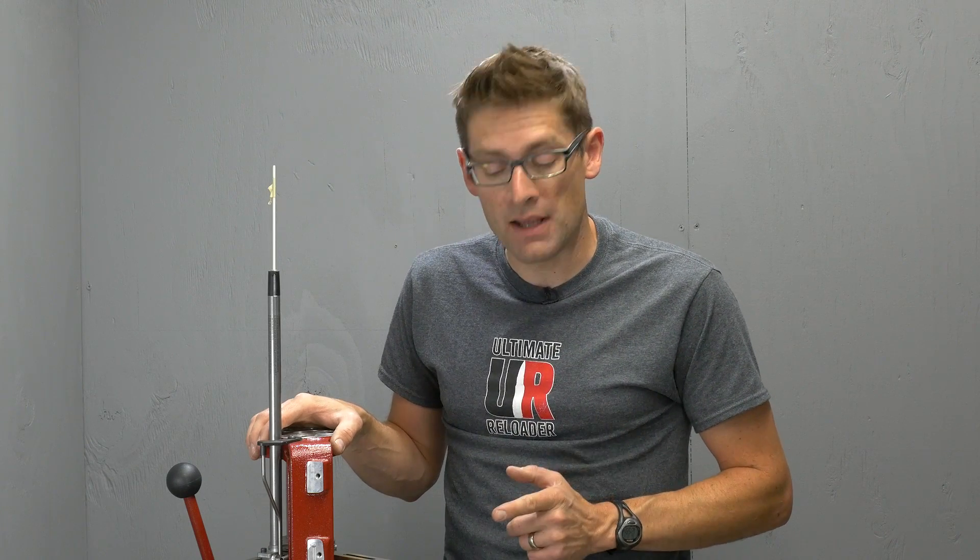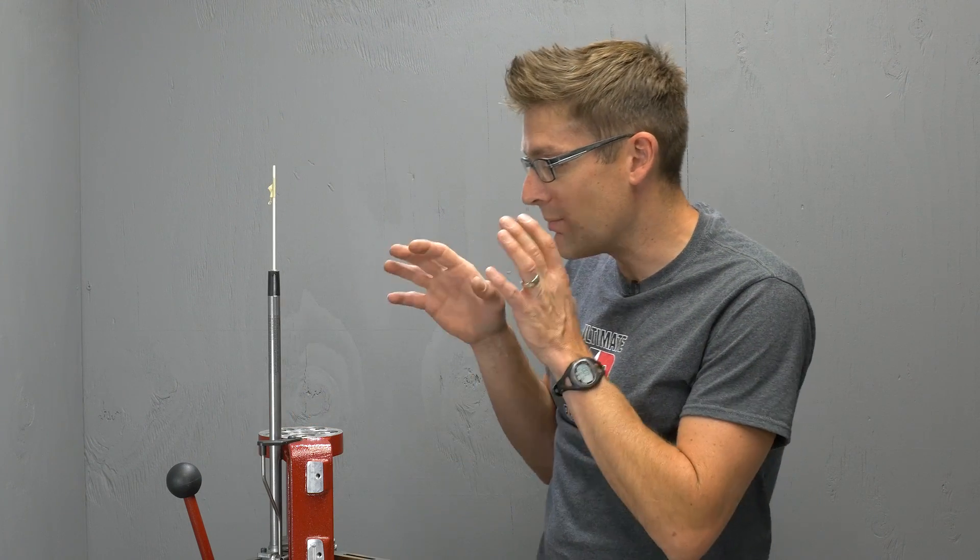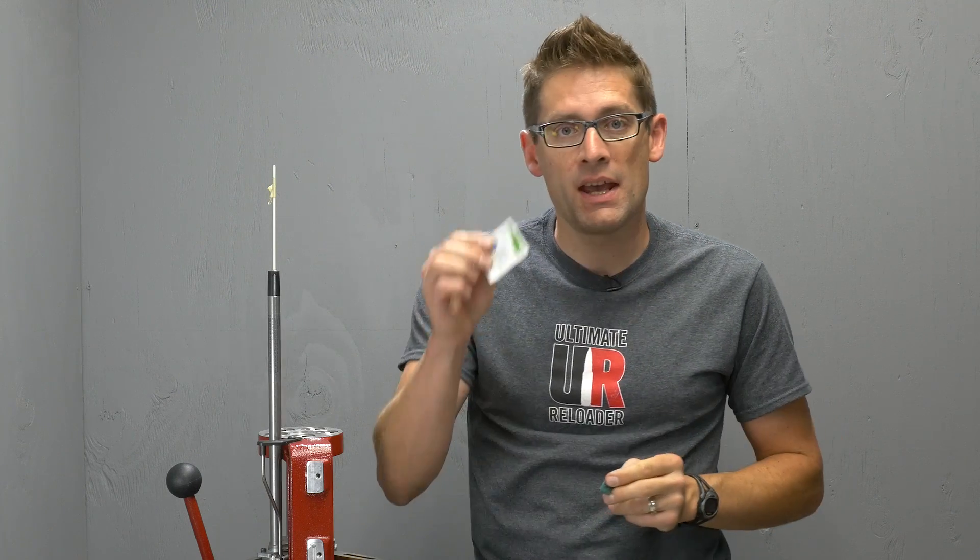So after taking a moment to remove the powder measure and the dies from the press, we are ready to install the lighting kit. The first thing we're going to need to do is to prep the surface and there are two components that are included with the kit. A little miniature section of Scotch-Brite pad to rough up the surface and then an alcohol wipe to wipe off all of the debris from that operation.